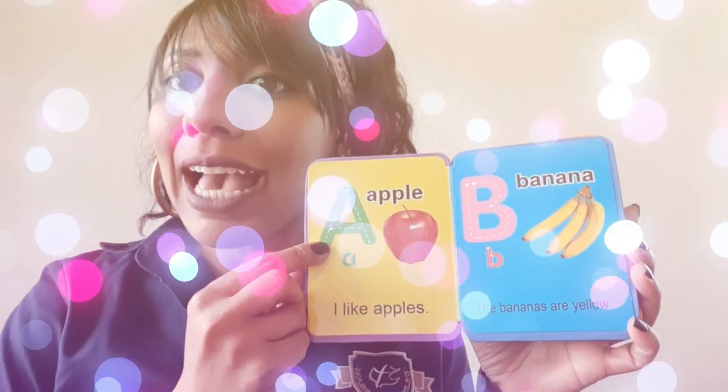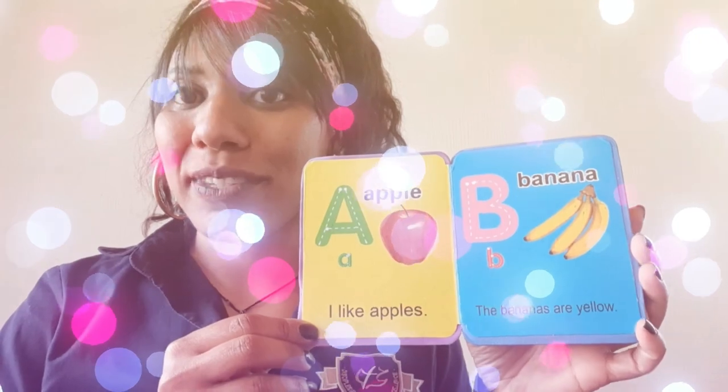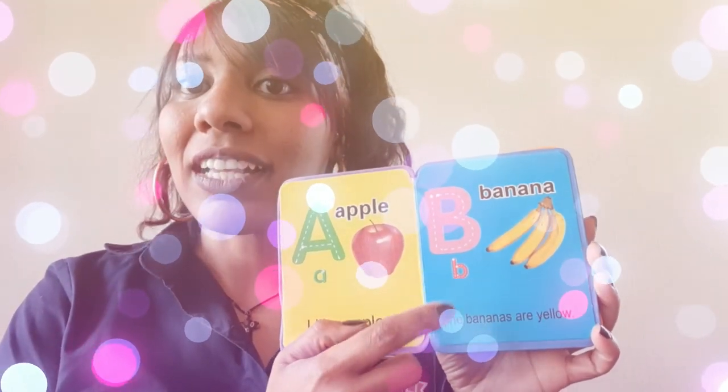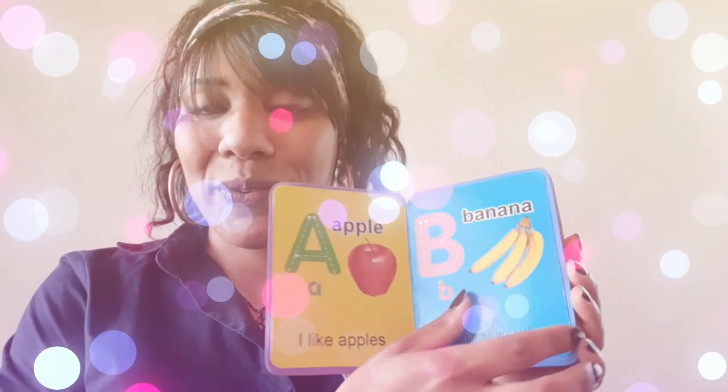A is for apple. I like apples. B is for banana. The bananas are yellow.